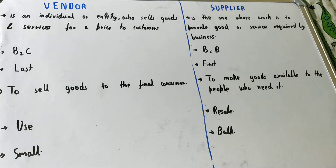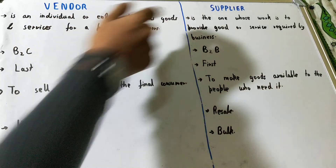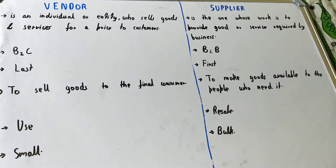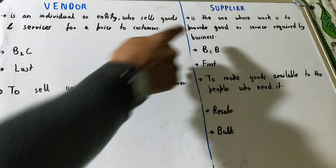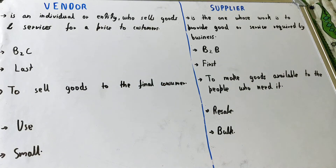Hello friends, in this video I'll be helping you with the difference between vendor and supplier. A vendor is an individual or entity who sells goods and services for a price to the customer — vendors sell goods and services to end customers. A supplier, on the other hand, is the one whose work is to provide goods and services required by the business — suppliers provide goods and services to businesses, organizations, or vendors.